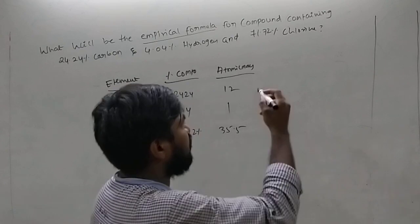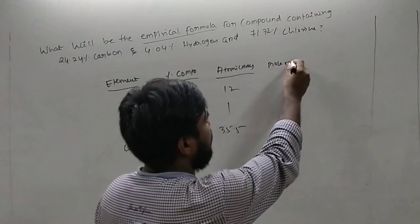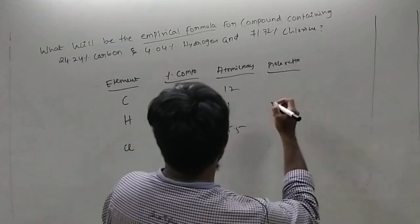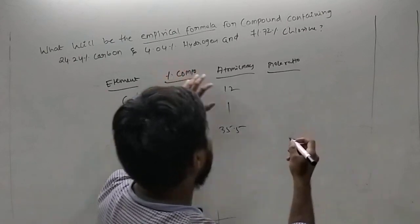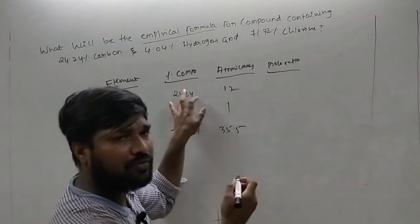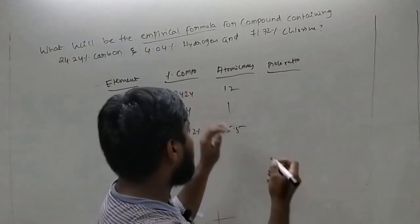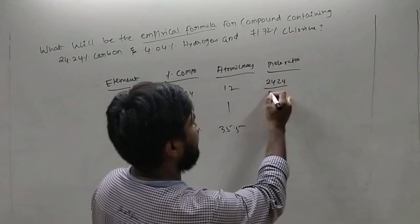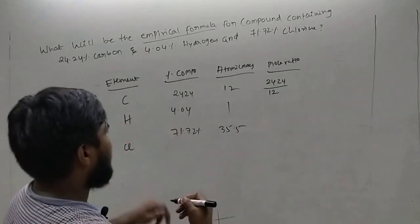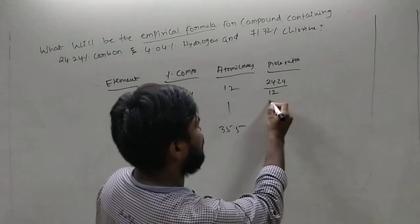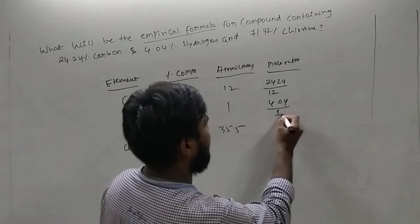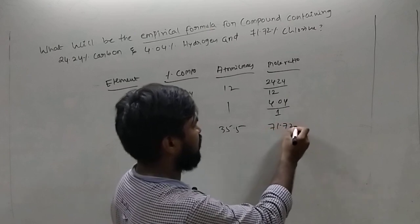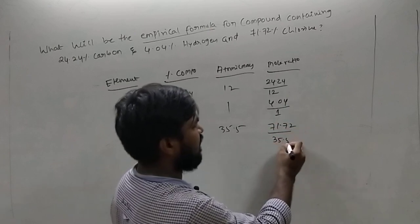Next, I am finding the mole ratio. The mole ratio is percentage of composition divided by atomic mass. For carbon: 24.24 divided by 12. For hydrogen: 4.04 divided by 1. For chlorine: 71.72 divided by 35.5.